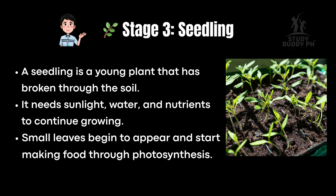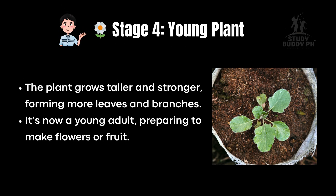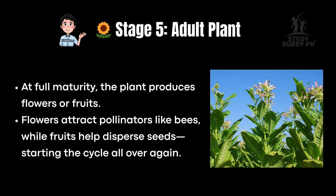Stage 3, Seedling: A seedling is a young plant that has broken through the soil. It needs sunlight, water, and nutrients to continue growing. Small leaves begin to appear and start making food through photosynthesis. Stage 4, Young Plant: The plant grows taller and stronger, forming more leaves and branches — now a young adult, preparing to make flowers or fruit. Stage 5, Adult Plant: At full maturity, the plant produces flowers or fruits. Flowers attract pollinators like bees, while fruits help disperse seeds, starting the cycle all over again.